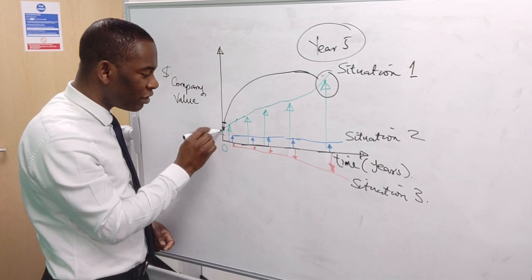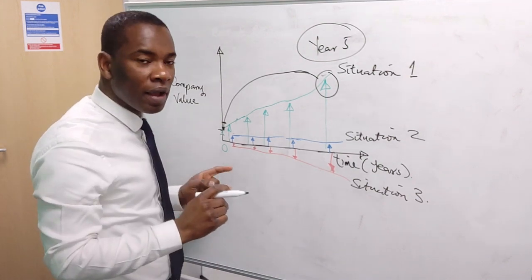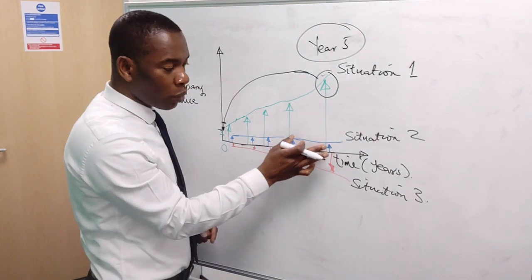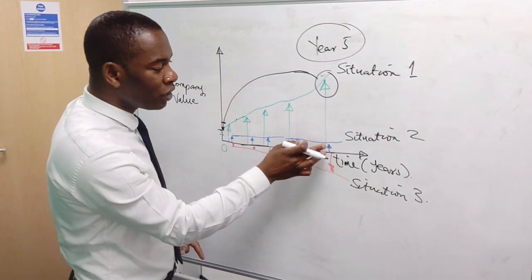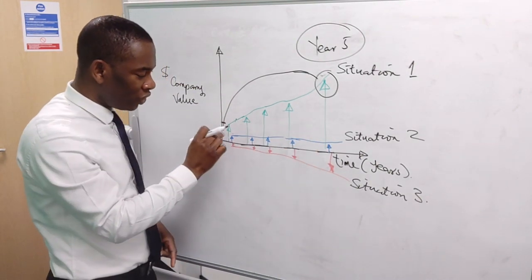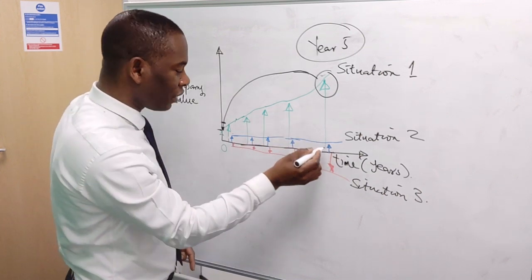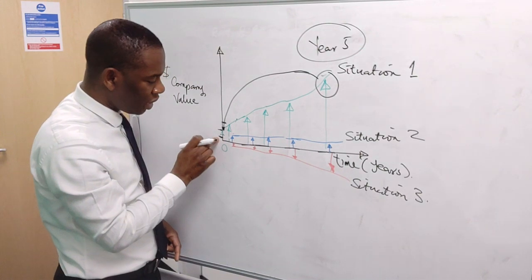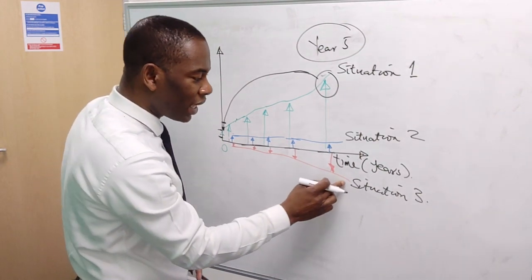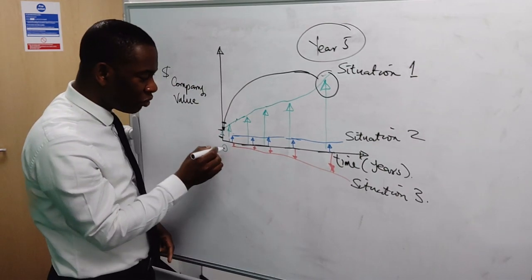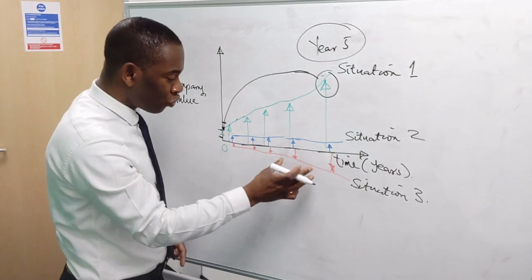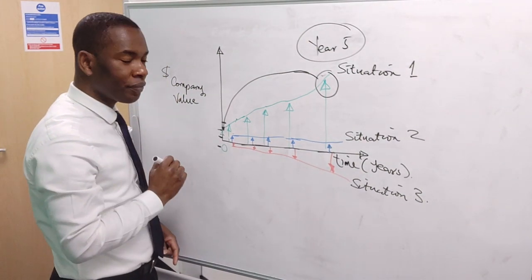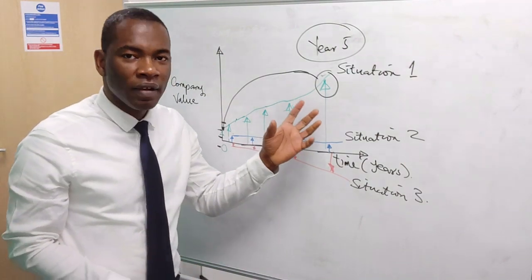If we do this for the blue line, we bring tomorrow back to today - you may actually see that tomorrow would be somewhere here. For the red line, if you discount, you will actually see that tomorrow would come right below here. So this is what valuation is all about.